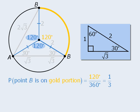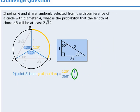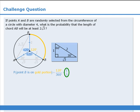We can simplify this to be one-third, so the probability is one-third that the length of chord AB will be greater than or equal to 2 root 3 units long.